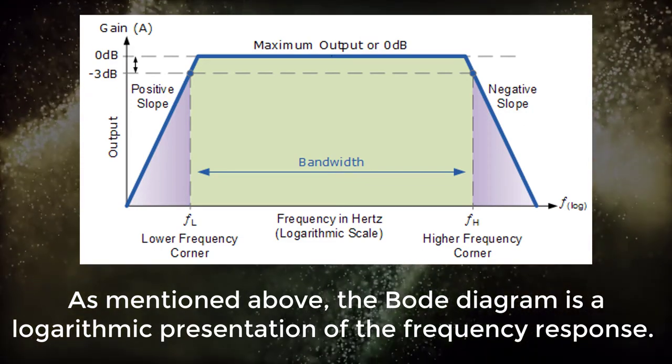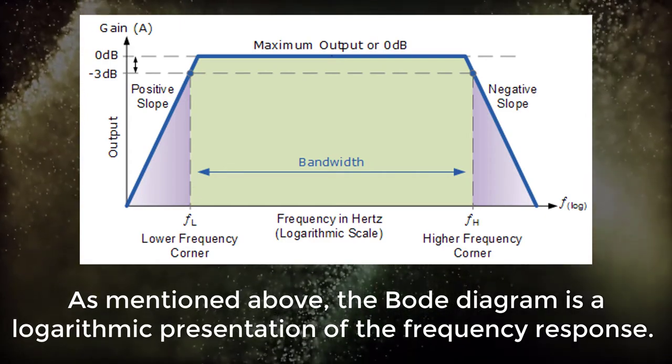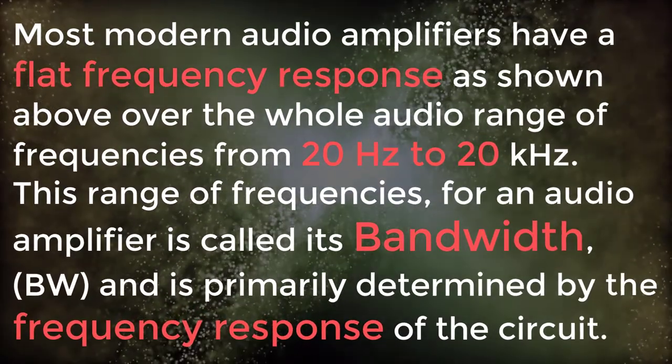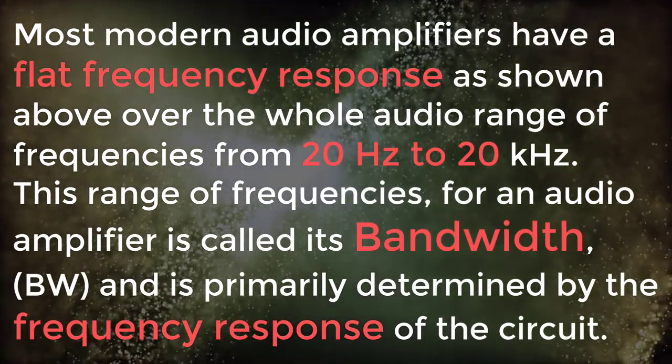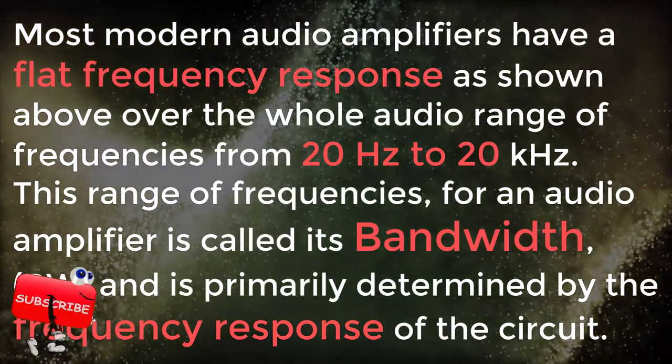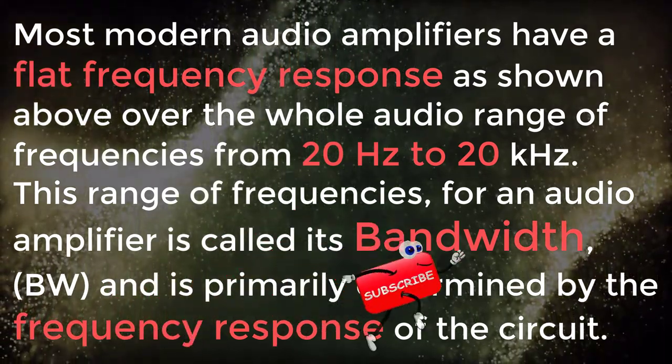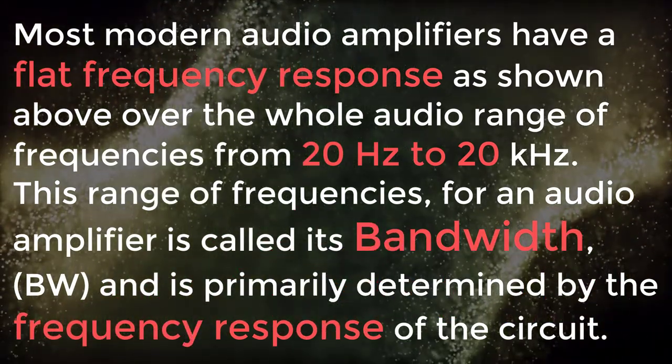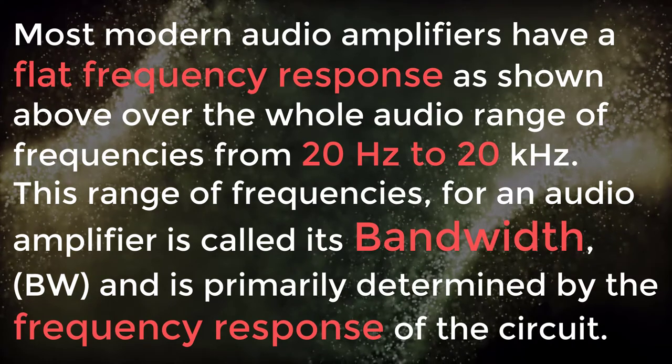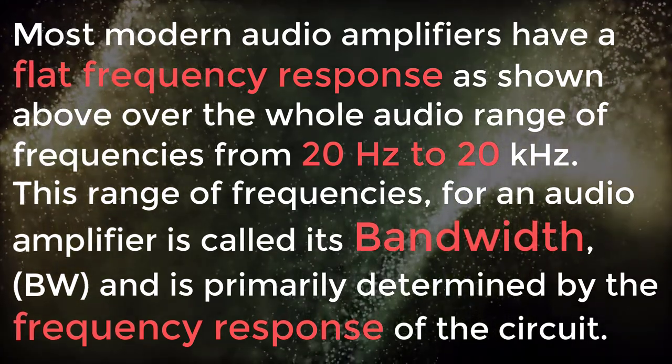Most modern audio amplifiers have a flat frequency response as shown above over the whole audio range of frequencies from 20 Hz to 20 kHz. This range of frequencies for an audio amplifier is called its bandwidth, BW, and is primarily determined by the frequency response of the circuit.